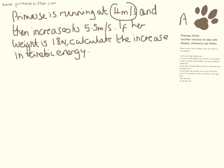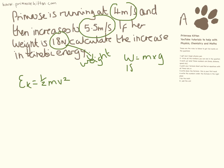Primrose is running at 4 metres per second and increases to 5.5 metres per second. If her weight is 18 neutrons, calculate the increase in kinetic energy. Now there are a large number of different parts to this equation. So this is her weight. And we need to find her mass for the equation that we're using. Because kinetic energy is half mass velocity squared. So the equation we need to use first is weight is mass times gravity. If her weight is 18 newtons, we're trying to find her mass. We know that gravity is 10. We do 18 divided by 10. So her mass is 1.8 kilograms.